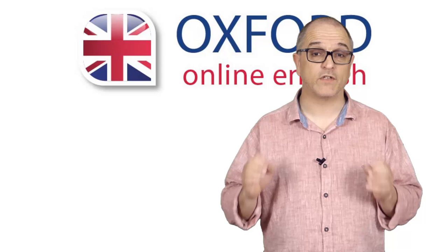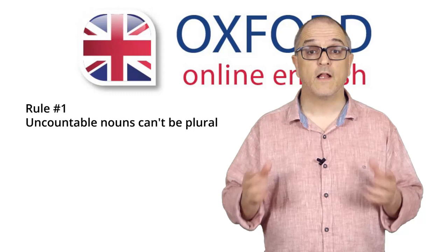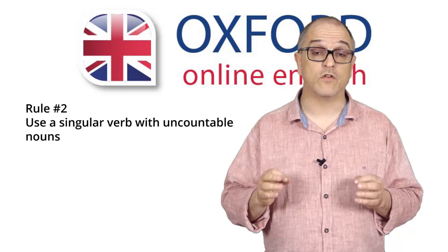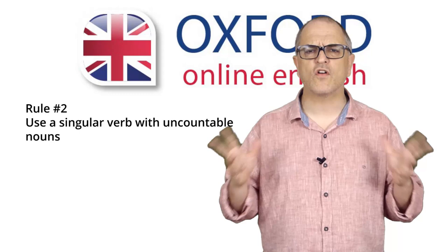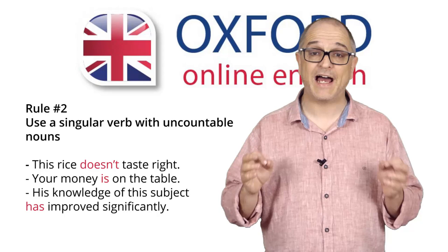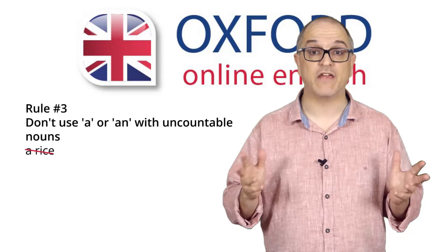Countable and uncountable nouns behave differently — they follow different rules. First, uncountable nouns can't be plural. That means you can't say monies, rices, or knowledges. These forms don't exist. Secondly, you need to use a singular verb with uncountable nouns. For example: this rice doesn't taste right; your money is on the table; his knowledge of this subject has improved significantly. Next, you can't use a or an with an uncountable noun. You can't say a rice, a money, or a knowledge.